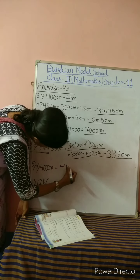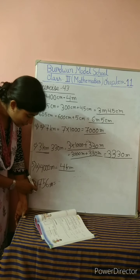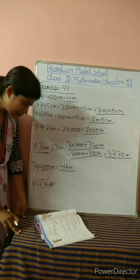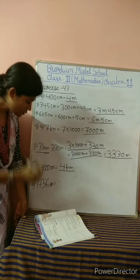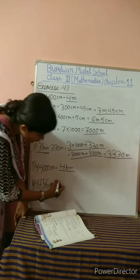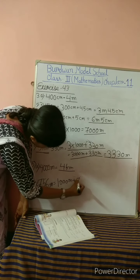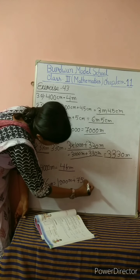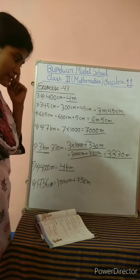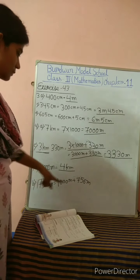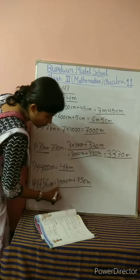Take another example, number C: 3 kilometers 300 meters. The meter part is already given, so only the kilometer part needs to be converted. So 3 kilometers: 3 times 1000 plus 300 meters. We know 3 multiplied by 1000 is 3000 meters, plus 300 meters gives us 3300 meters.